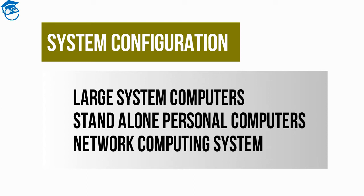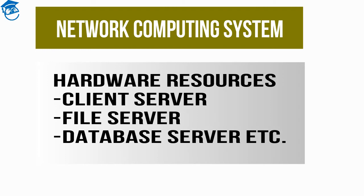Lastly, it's about the network computing system. A network is basically a group of interconnected systems sharing services and interacting via shared communication links. All networks have a transmission medium and rules for communication. The network shares hardware and software resources. In terms of hardware resources, number one is the client server — a server dedicated to performing specific tasks to support other computers on that network.